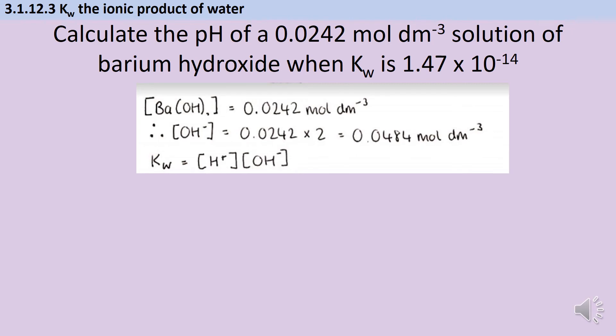We know that KW is the concentration of hydrogen ions multiplied by the concentration of hydroxide ions. So we can take the number we've been given in the question for KW and rearrange this expression to make the concentration of hydrogen ions the subject.